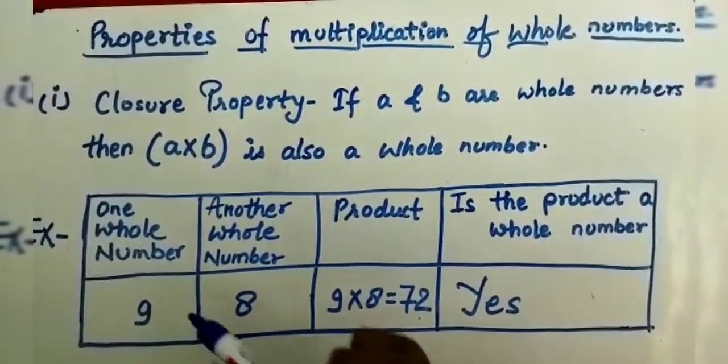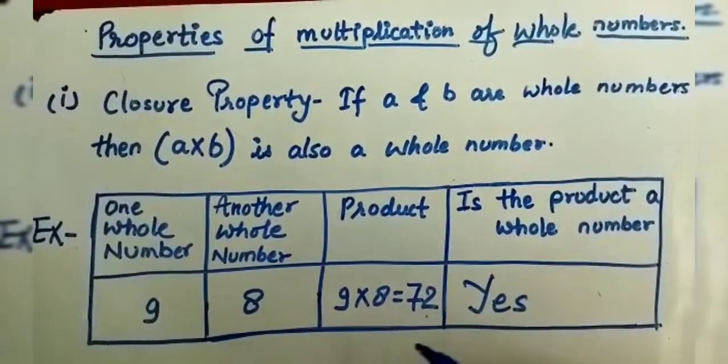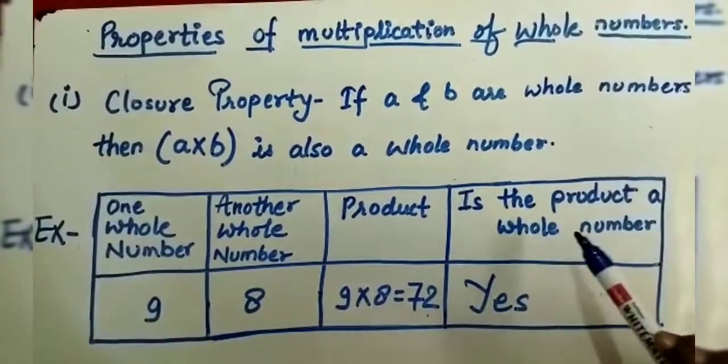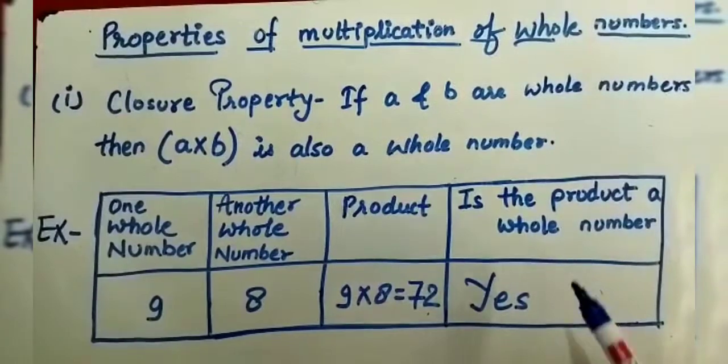First we take an example. One whole number is 9, another whole number is 8. The product of 9 into 8 is equal to 72. Is the product a whole number? Yes, 72 is a whole number.